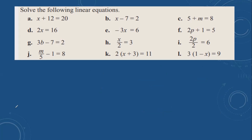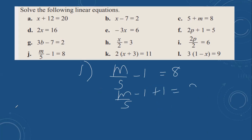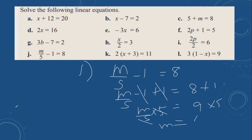Then j: n over 5 minus 1 equals 8. The opposite of minus 1 is plus 1, so do the same thing to both sides. n over 5 equals 9. Then you can multiply by 5 to remove the 5, and n is equal to 45.